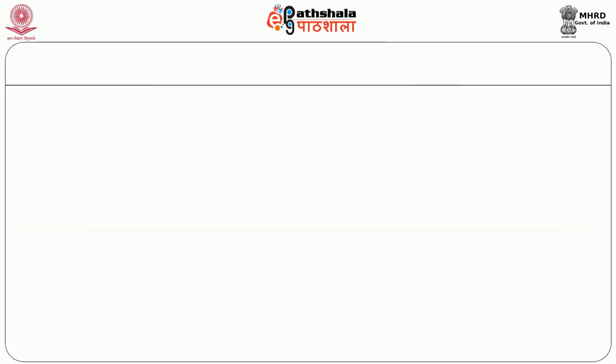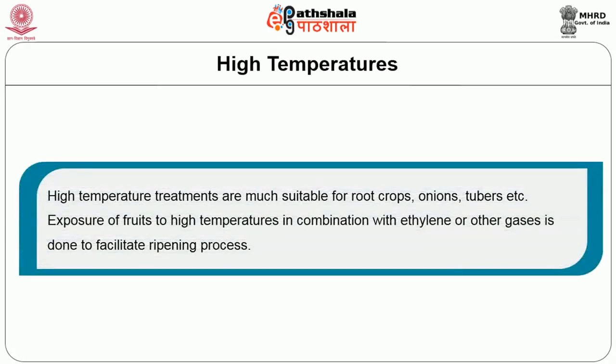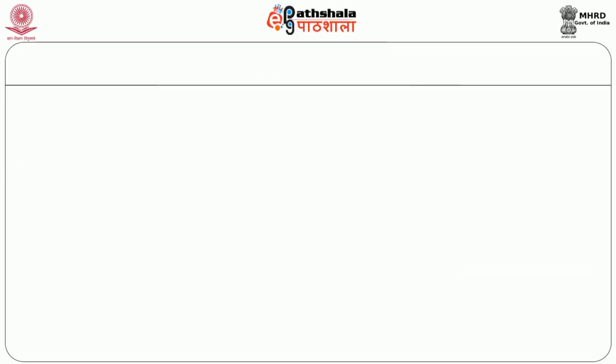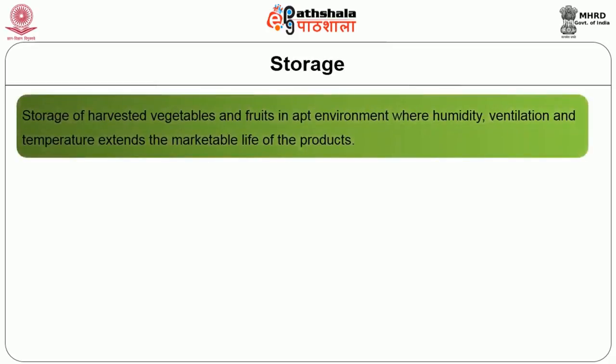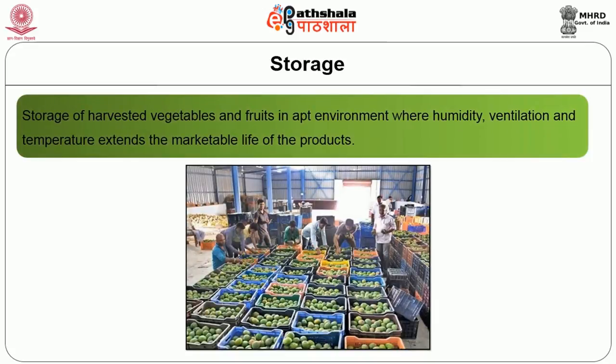The next method is storage at high temperature, where high temperature treatments are suitable for root crops, onions, tubers etc. Exposure of fruits to high temperatures in combination with ethylene or other gases is done to facilitate the ripening process. Storage of harvested vegetables and fruits in an apt environment where humidity, ventilation and temperature are controlled extends the marketable life of products.